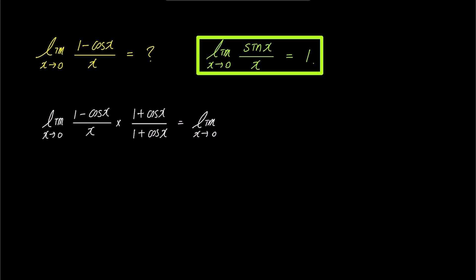The numerator of this limit expression becomes 1 minus cosine squared x as x approaches 0, and the denominator becomes x times 1 plus cosine x.